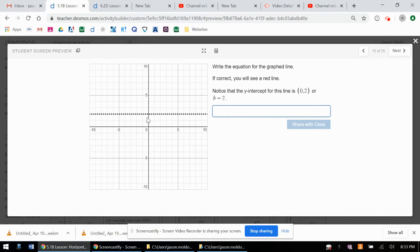This one is horizontal. We're going to write the equation for this graphed line. It says it does have a y-intercept of (0, 2), or b equals 2. So this is going to be horizontal, so it's going to be y equals, even though the y-axis is up and down. And it's at 2.